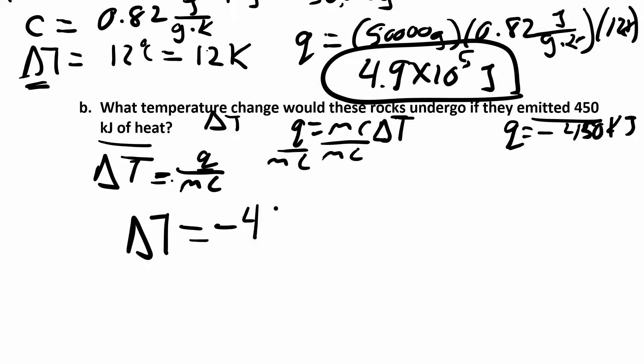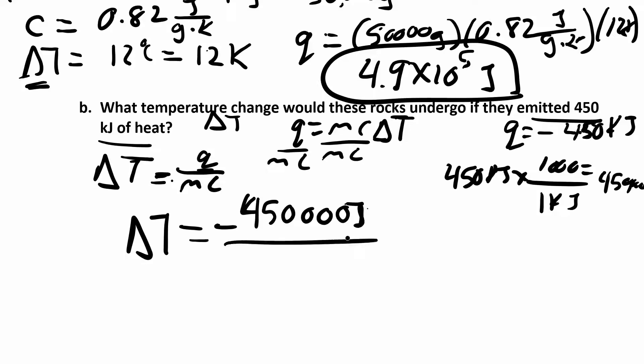ΔT is q, so q is right here, it's negative 450 kilojoules. How do I convert that to joules? I want that in joules because my c is in joules. I want to make sure my units are the same. In one kilojoule there's a thousand joules, so you end up with 450,000 joules. So I have negative 450,000 joules. Mass, I had 50,000 grams. And then my c is still the same, 0.82 joules per gram K.